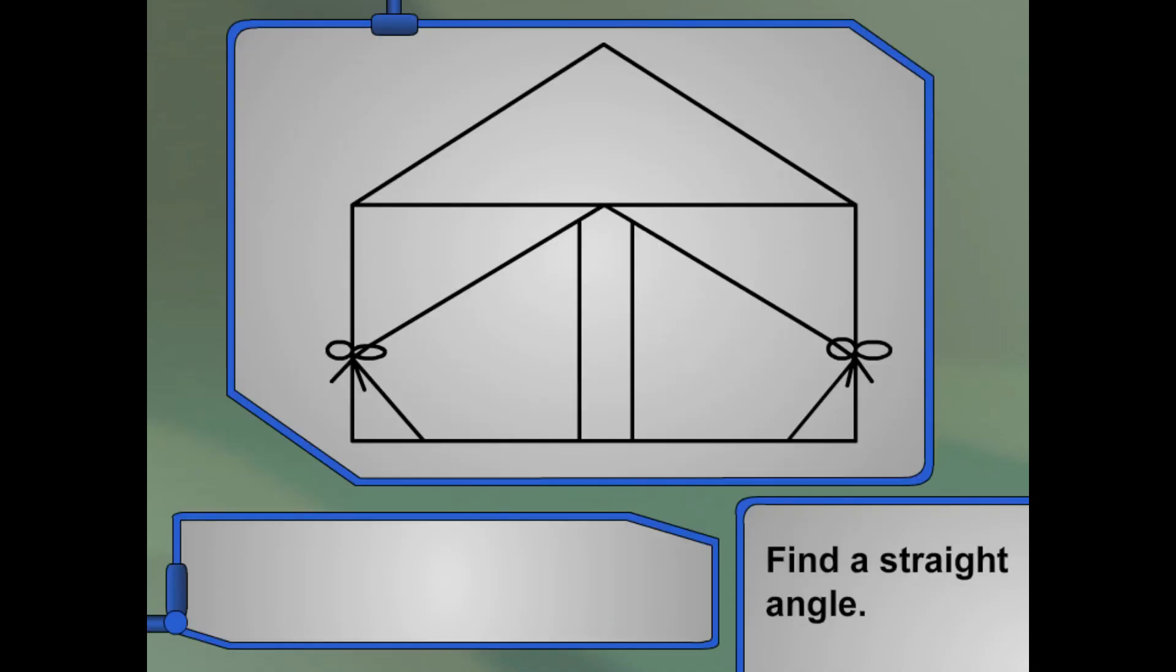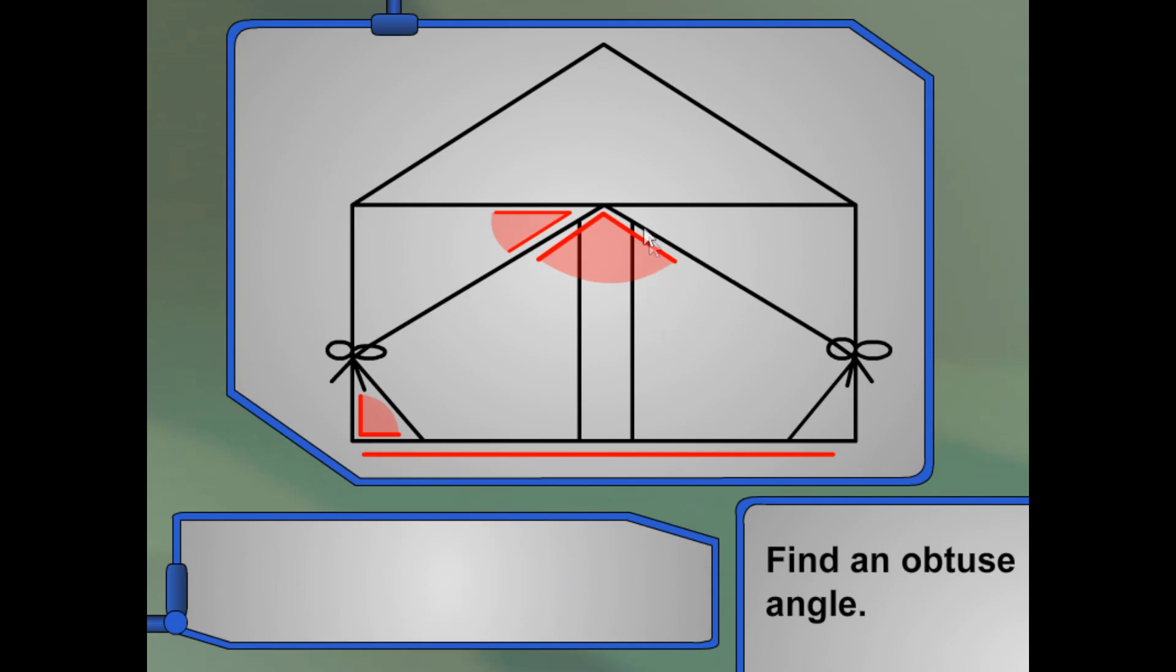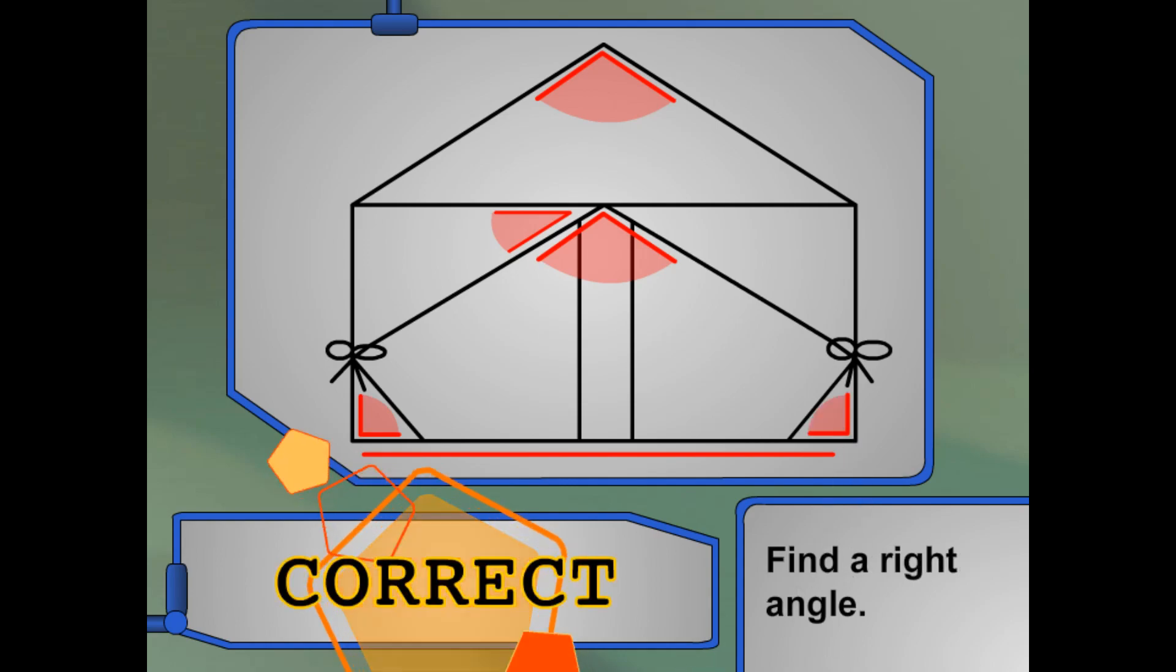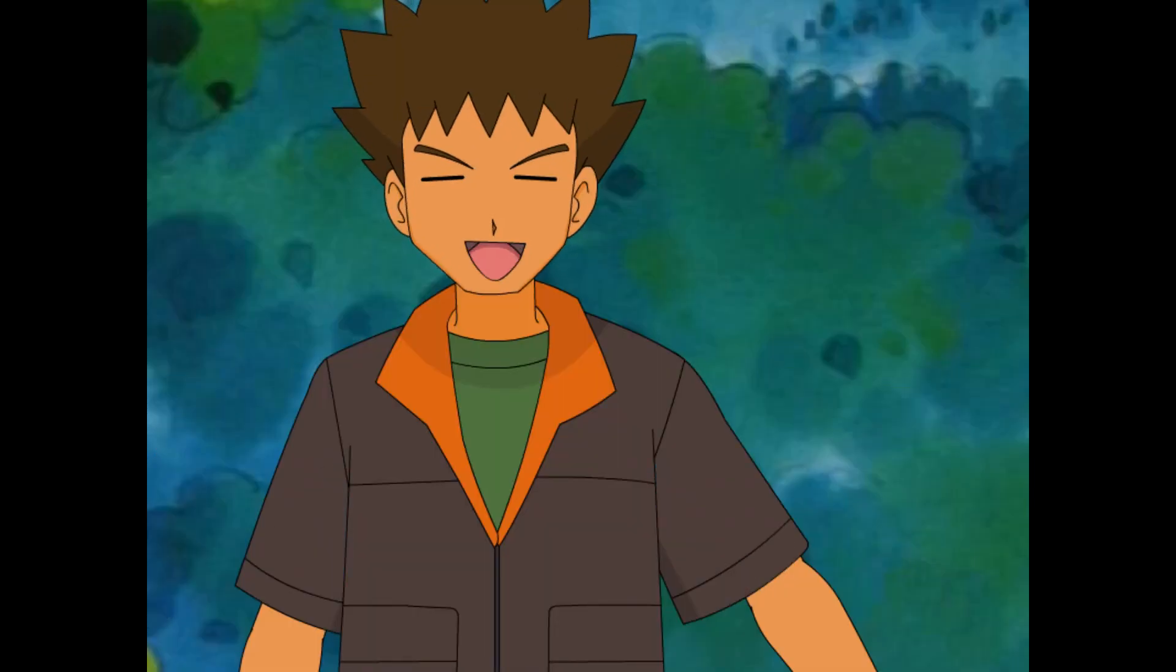Find a straight angle. You got it! Find an acute angle. All right! Find an obtuse angle. Awesome! Find a right angle. You got it! Find another obtuse angle. All right! Find another right angle. Way to go! Find another straight angle. You got it! Find another acute angle. All right! Find another right angle. Awesome! Yeah! We did it! The tent is up and ready to go!